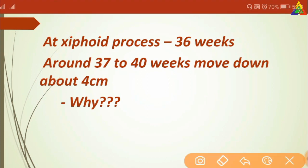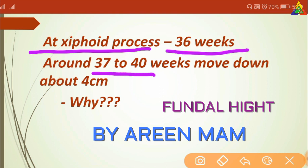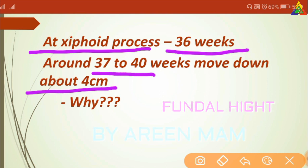At about 36 weeks, you would expect the fundal height to be at the xiphoid process. Then around 37 to 40 weeks, the fundal height actually regresses down by about four centimeters, as the baby settles down into the pelvic cavity and the fundal height decreases a little bit during that time.